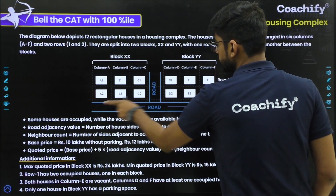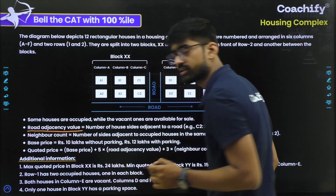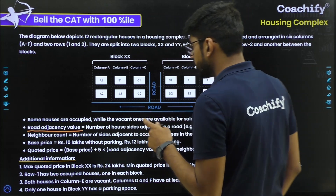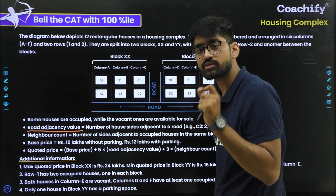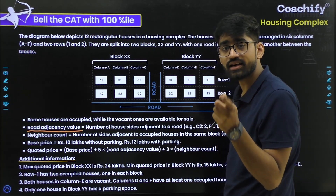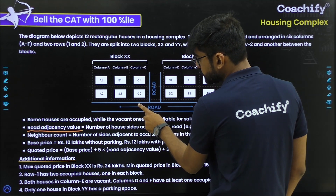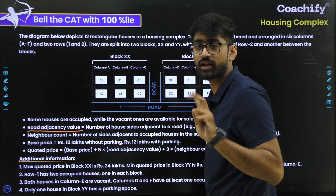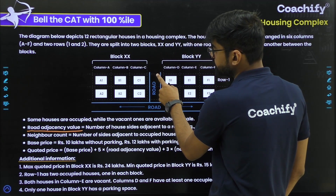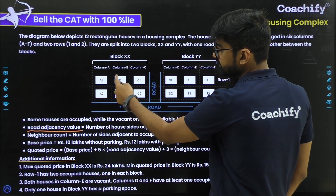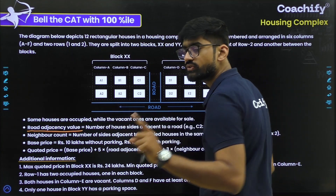Now there are 2 roads. With this comes the concept of road adjacency value. What is road adjacency value? It is the number of house sites adjacent to a road. For example, C2 has two sides adjacent to roads, so its road adjacency value is 2. For C1, it is 1 because only one side is adjacent to a road. For B1, it is 0 — no road is adjacent to any of its sides. Same for A1. For A2 and B2, the road adjacency value is 1.